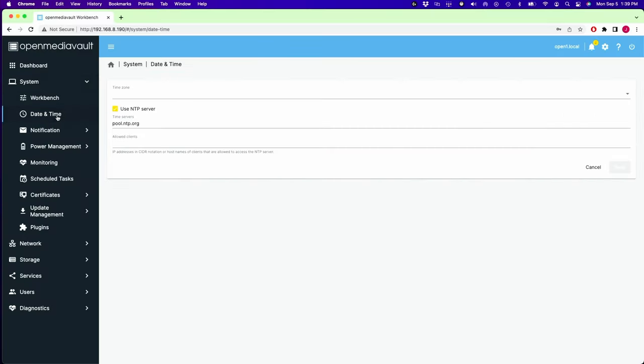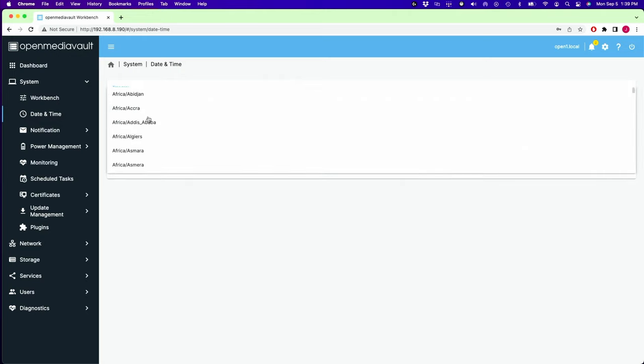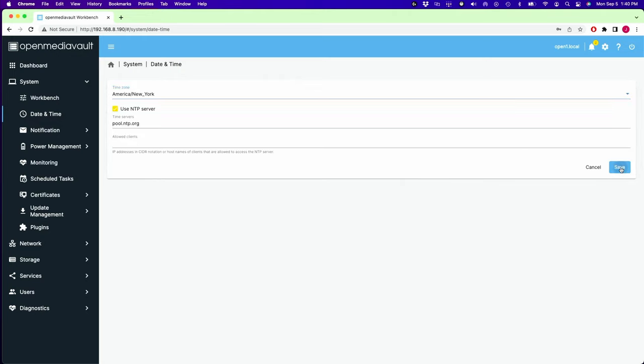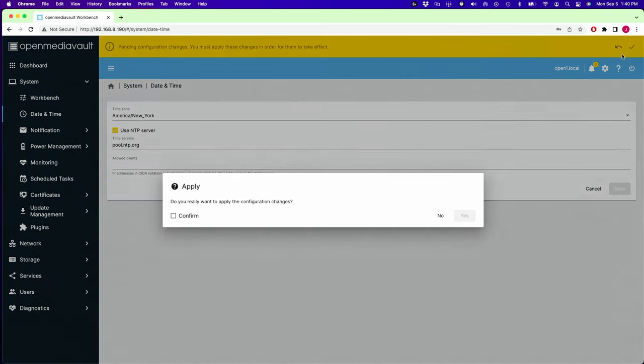Next we have date and time, and we want to pick our time zone, then click Save, and then the check mark, and then Confirm, and Yes.